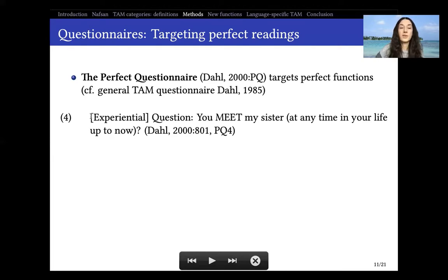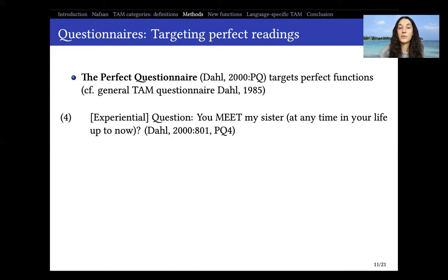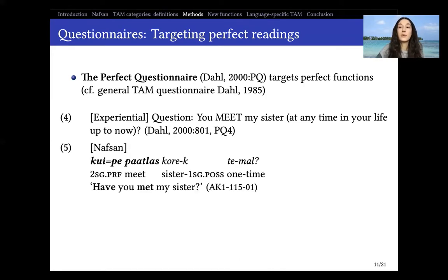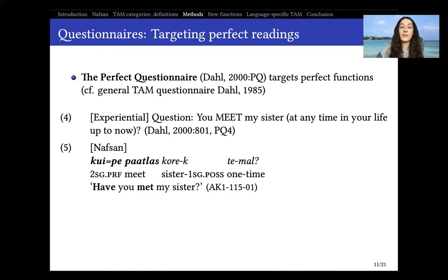For instance, to elicit the experiential function, we would say something like: 'you MEET my sister at any time in your life up to now' — where 'meet' is in capital letters and uninflected in English so that the person doesn't get a bias in translation. The phrase 'at any time in your life up to now' captures the experiential function that experiential perfect usually has. Indeed, when we look at Nafsan, this is where we do find perfect — we start resolving the uncertainty we had from the corpus.